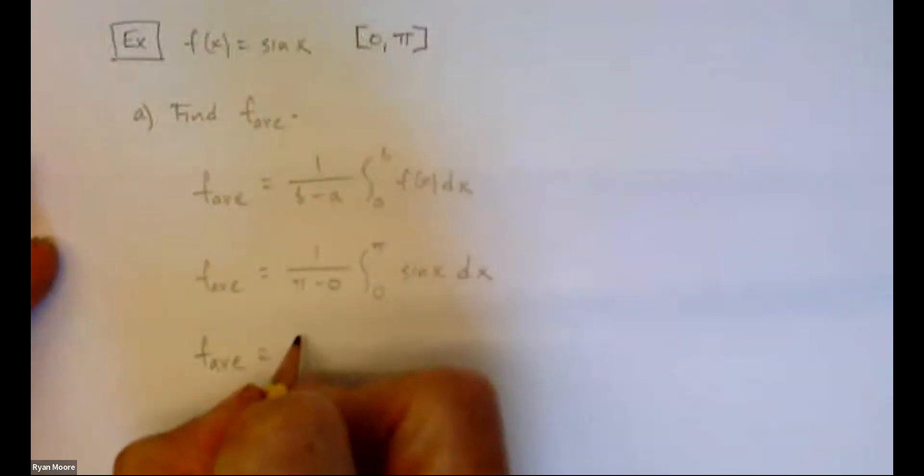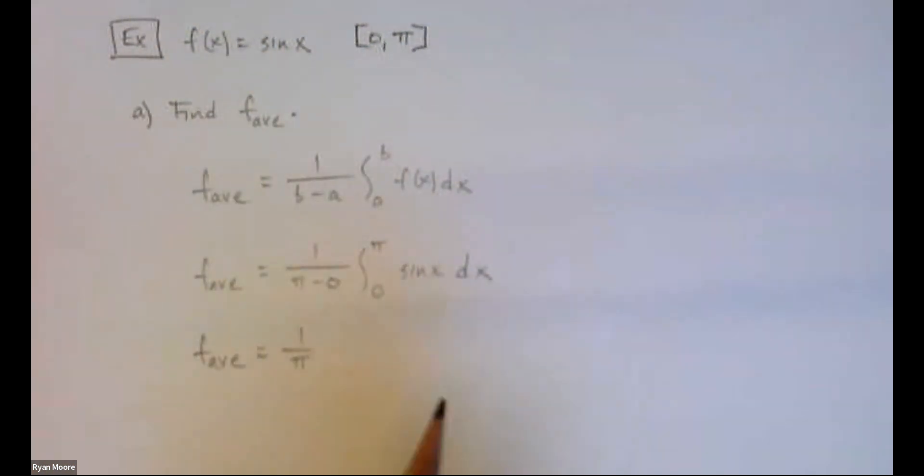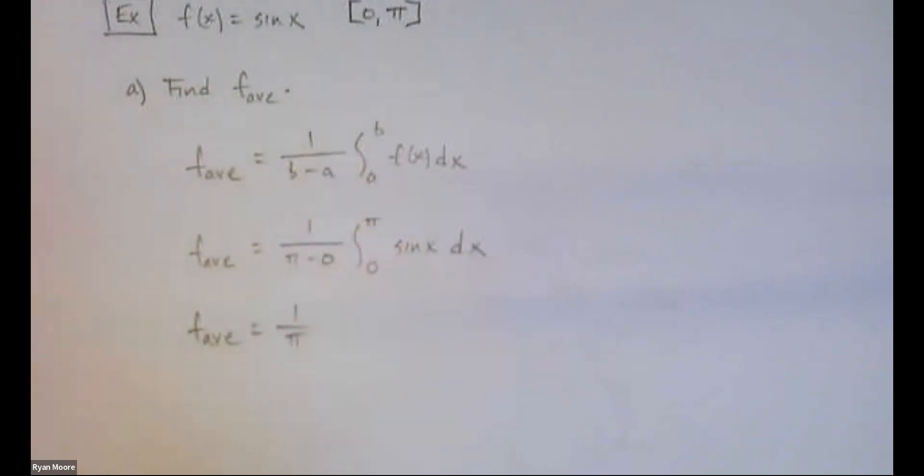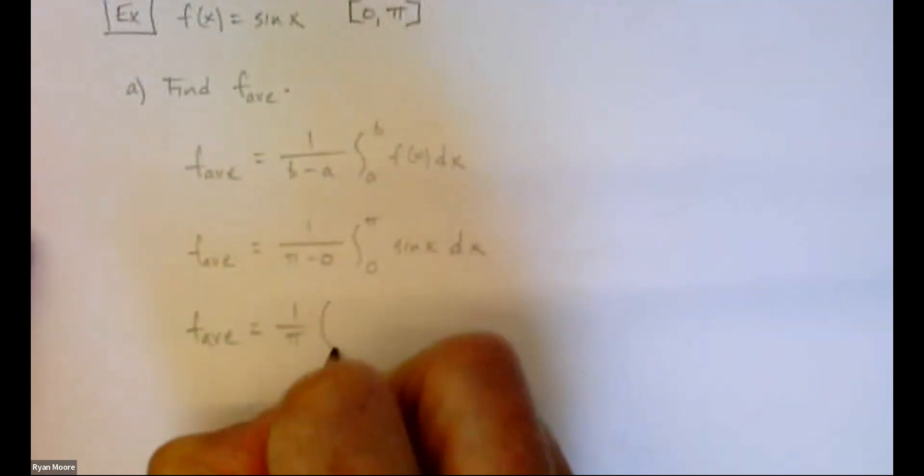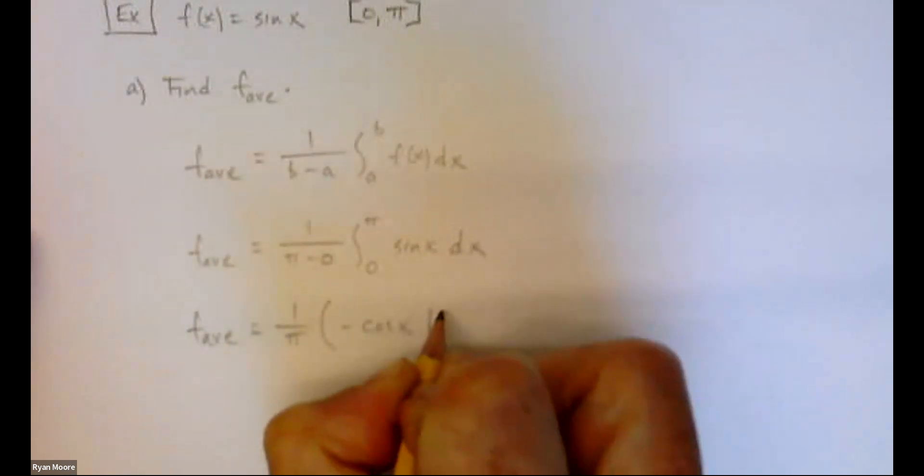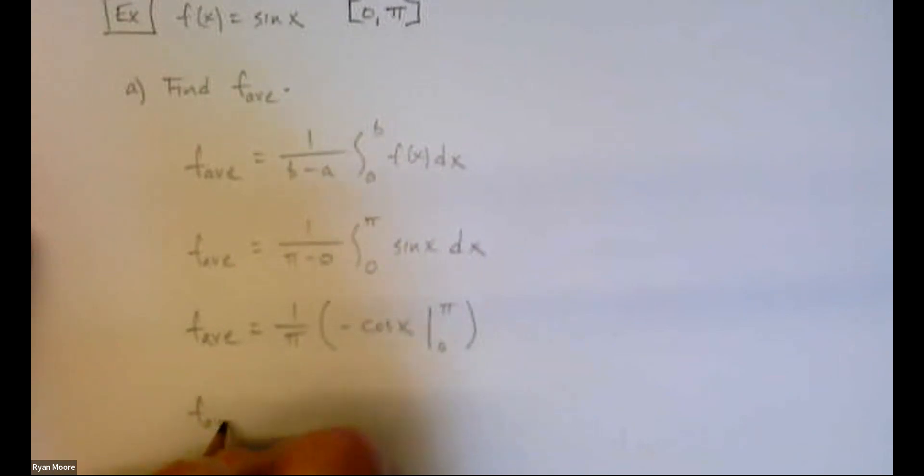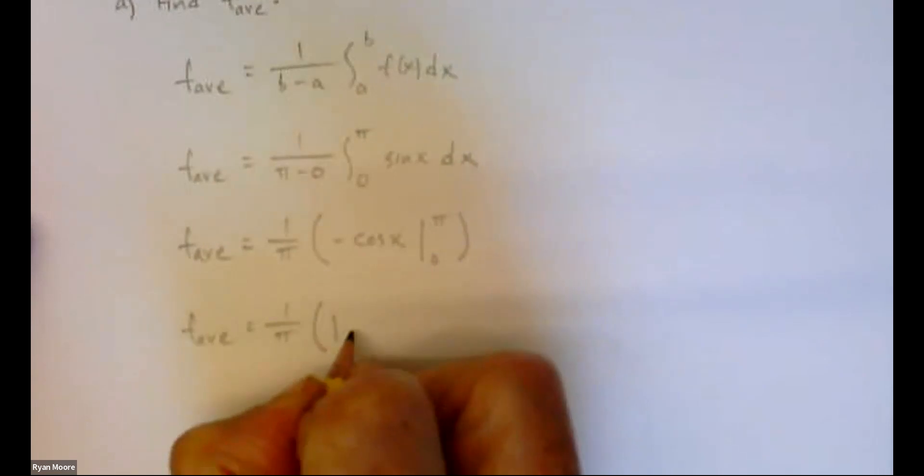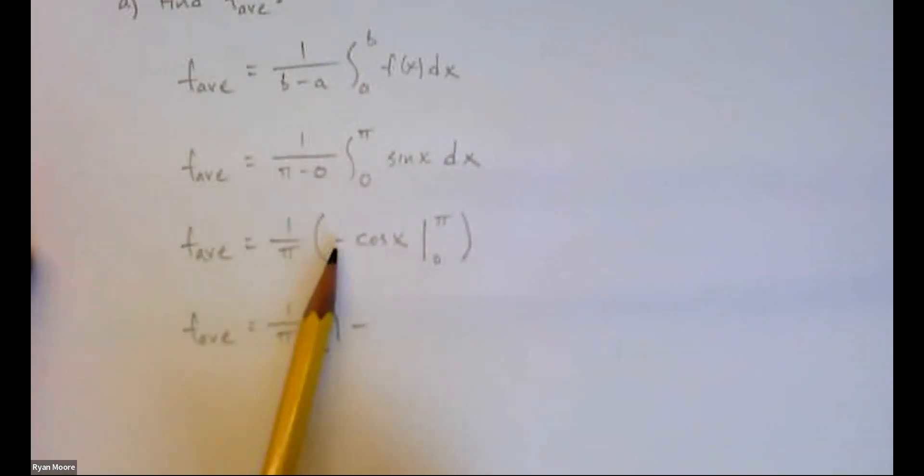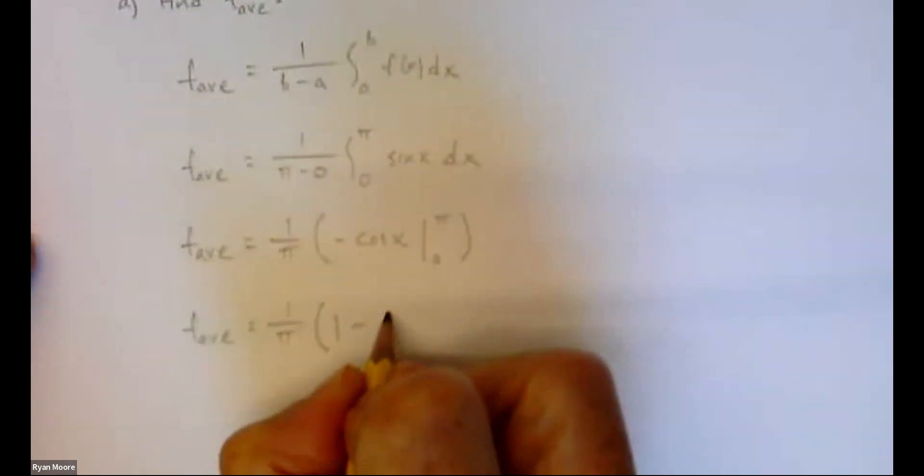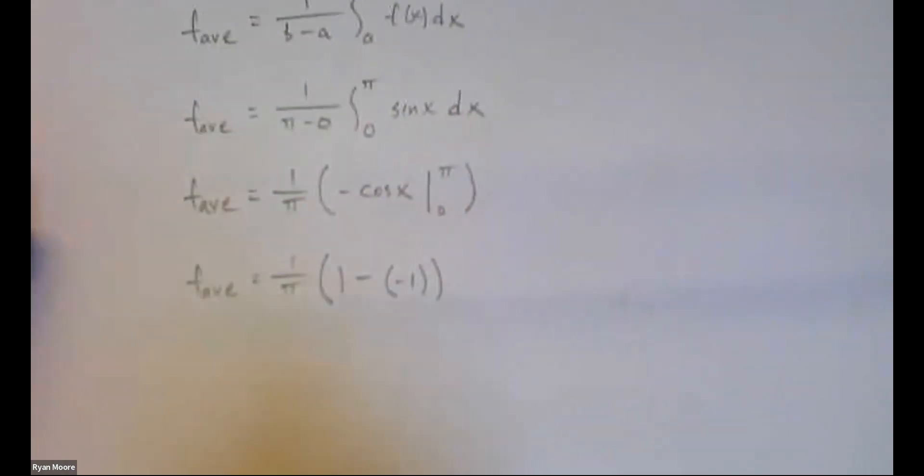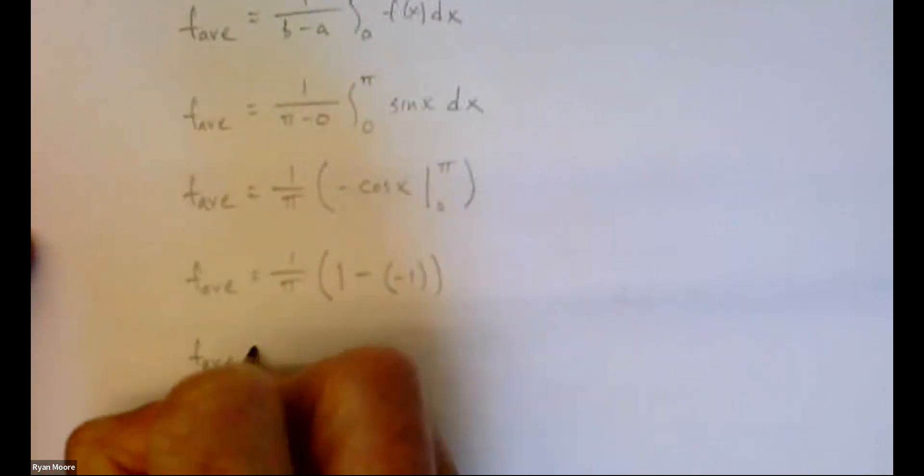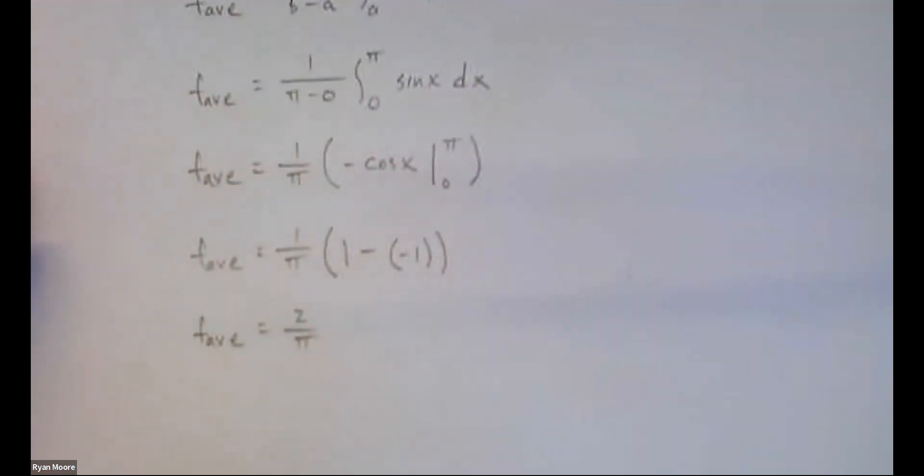Well, 1 over pi minus 0, let's just call that 1 over pi. Now here, antiderivative of sine x would be negative cosine x. We're going to go from 0 to pi. Let's see. Plugging in pi, cosine of pi is negative 1, so take a negative of that and you got 1. Cosine of 0 is 1, so that makes it negative 1. Also, 1 minus negative 1 is 2. The f average, the average y value on that interval for sine x is 2 over pi.